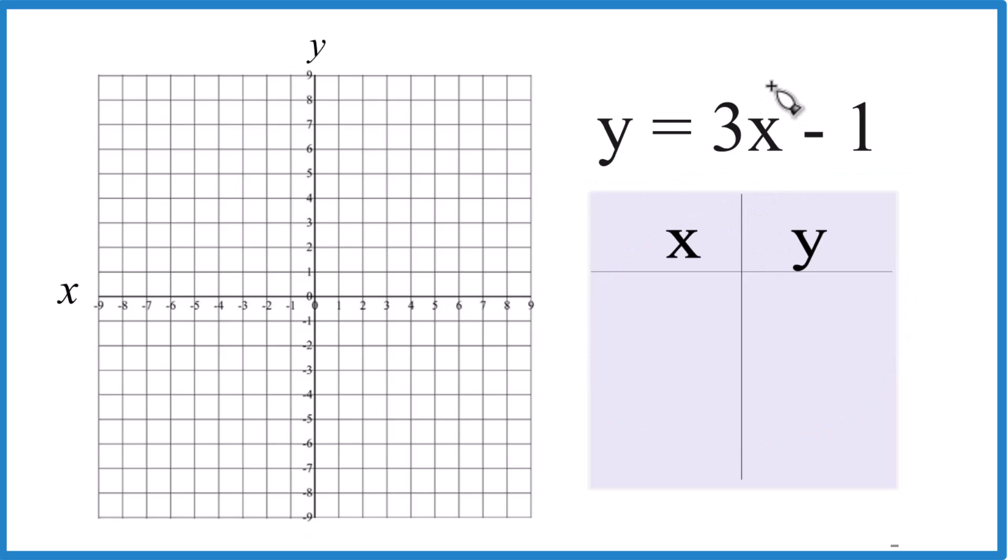So I'm going to put values in for x here, and then we'll do the math. That'll give us y, then we'll have a point, and we'll just graph the points, and we'll have the graph for y equals 3x minus 1.